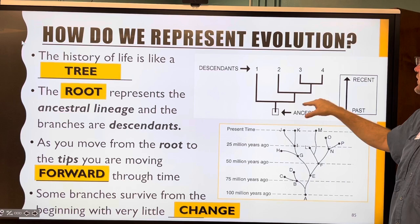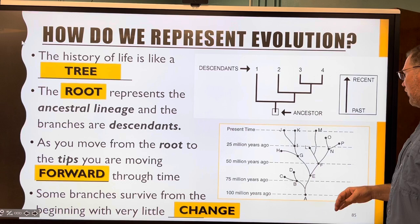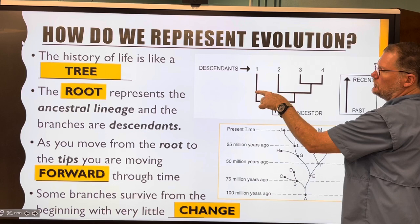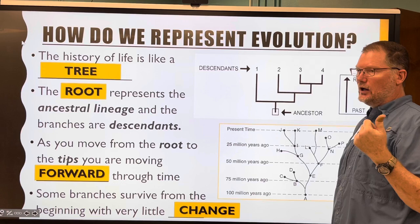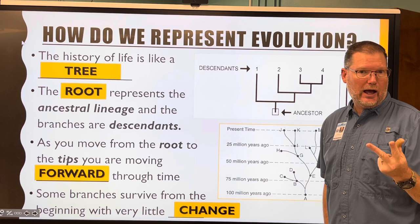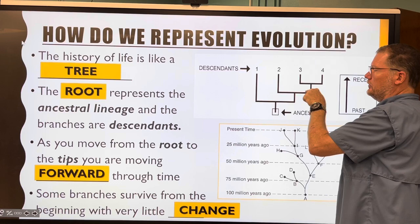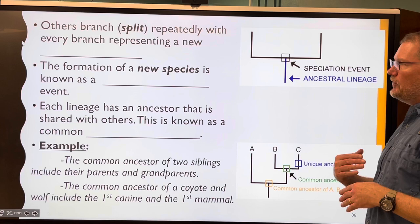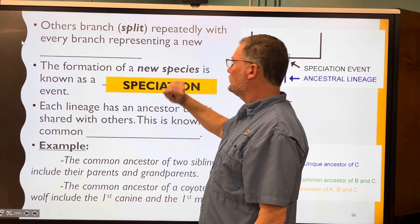Moving from root to tips, you move forward through time. Some branches survive from the beginning with very little change — like alligators here in Florida, which have been around since the time of the dinosaurs, or horseshoe crabs and sharks that haven't changed much in 65 million years. Other branches split repeatedly, with every branch representing a new species. And when a new species forms, that's called speciation.